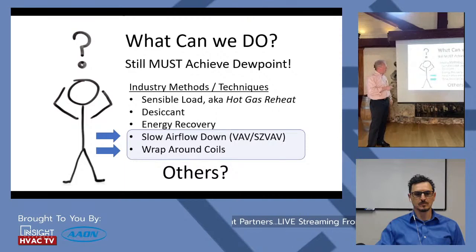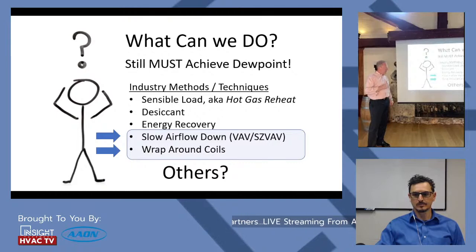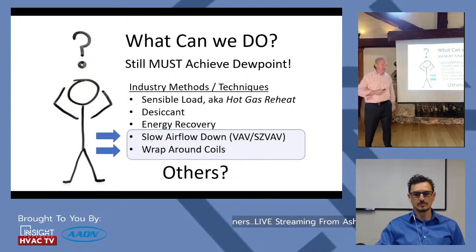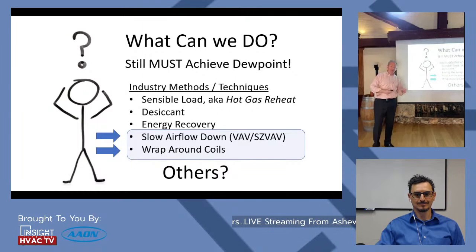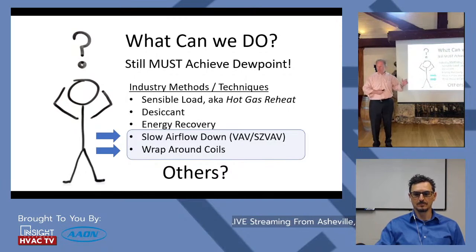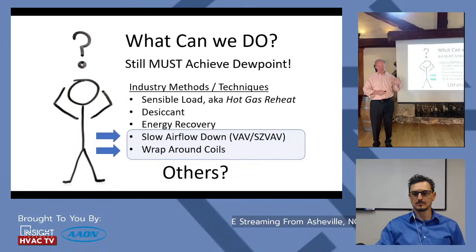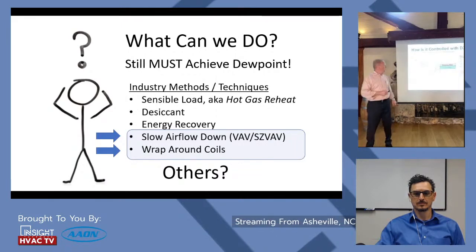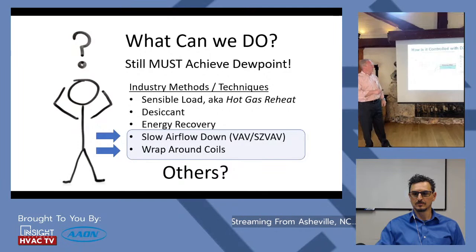Summary: we must always achieve the required dew point. Latent design machines can control down to about 42°F dew point; I have some controlling to 38°F, but that leaves only a 6°F approach before freezing — very tough to control. Sensible-design machines typically control to about 60°F dew point. With only 25% outside air on a semi-humid day, I showed how a system can fail. Below 42°F dew point, start considering desiccants. And 55°F dew point is easy under light outside air load — but add significant outside air and any machine will struggle.